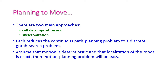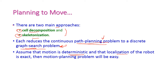There are two main approaches in motion planning. First is cell decomposition, and second is skeletonization. Both approaches reduce the continuous path planning to a discrete graph search problem, which greatly reduces complexity. It is also easier when the motion is deterministic and the localization of the robot is exact.